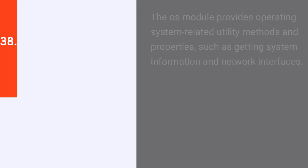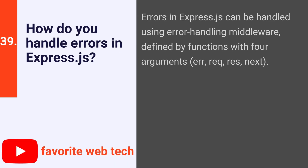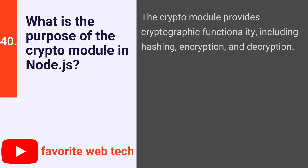What is the OS module used for in Node.js? The OS module provides operating system-related utility methods and properties, such as getting system information and network interfaces. How do you handle errors in Express.js? Errors in Express.js can be handled using error-handling middleware, defined by functions with four arguments: error, req, res, next.